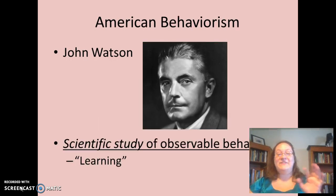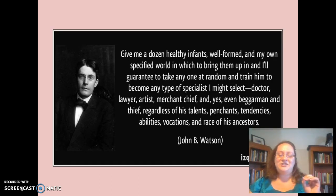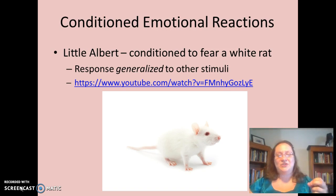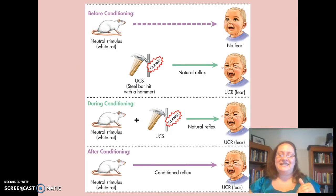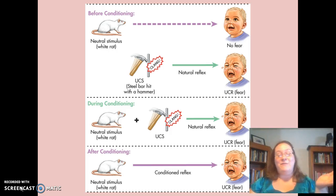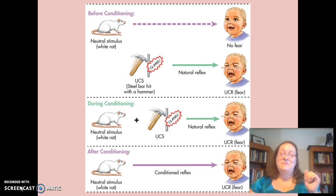Definitely read about John Watson in your book — he's very important for the American behaviorism movement, interested in the scientific study of observable behavior. You may have heard of his most famous work with Little Albert. Watson thought you could use classical conditioning to condition emotional reactions in humans. He conditioned baby Little Albert to fear a white rat by pairing the rat with a loud noise. After repeated pairings, Little Albert eventually became afraid when shown only the rat. This fear generalized to Watson's beard, Santa Claus masks, and other fuzzy things.